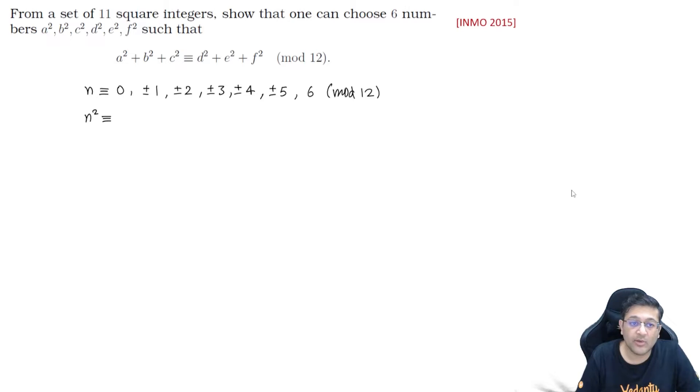I hope you have attempted the question. The approach is quite easy. First, focus on what remainder you get when any square is divided by 12. Let's understand: any number n is congruent to 0, ±1, ±2, ±3, ±4, ±5, or 6 mod 12. These are the different remainders when you divide by 12. Now if you square those integers, let's see what remainders are possible. 0² = 0, (±1)² = 1, (±2)² = 4, (±3)² = 9. Further terms give the same remainder: 4² = 16 = 4 mod 12, (±5)² = 25 = 1 mod 12, 6² = 36 = 0 mod 12.